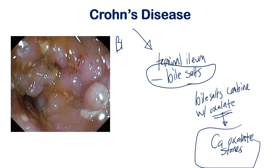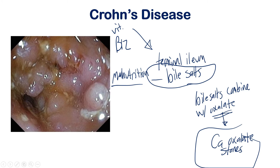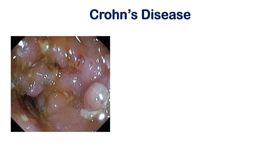On top of that, vitamin B12 is absorbed at the terminal ileum. Also, since Crohn's can affect anywhere in the GI tract including the duodenum — where most absorption occurs — patients can have all sorts of malnutrition. If a patient presents with various vitamin deficiencies and is malnourished despite eating, you should be thinking of Crohn's disease in the context of inflammatory bowel disease.